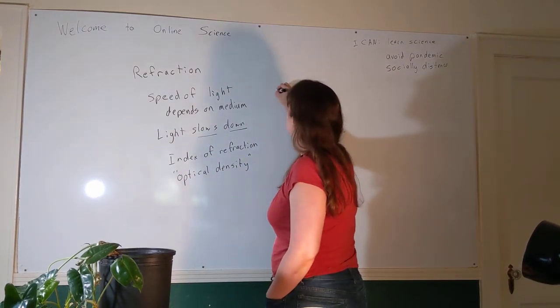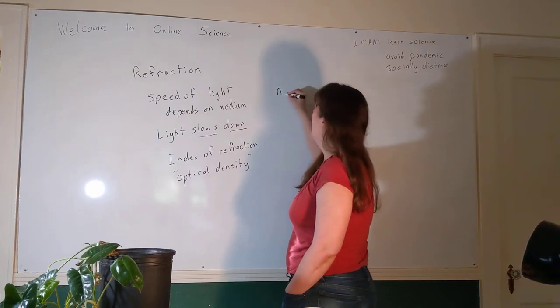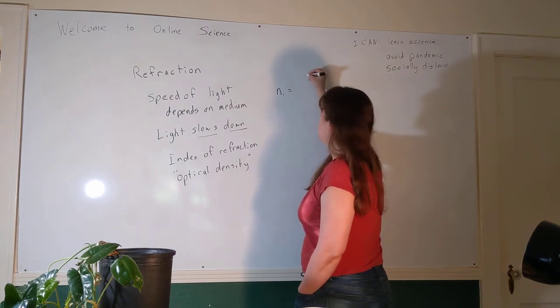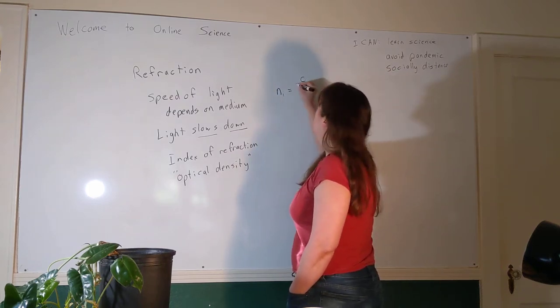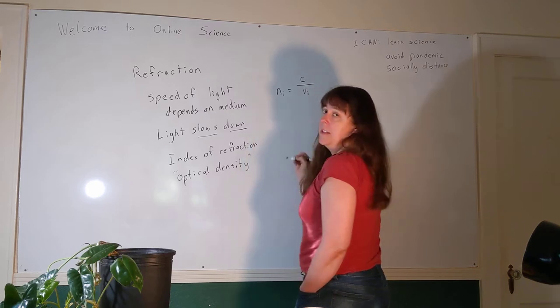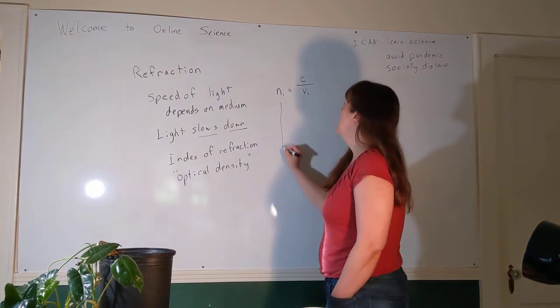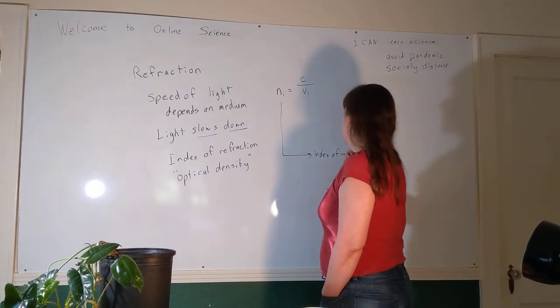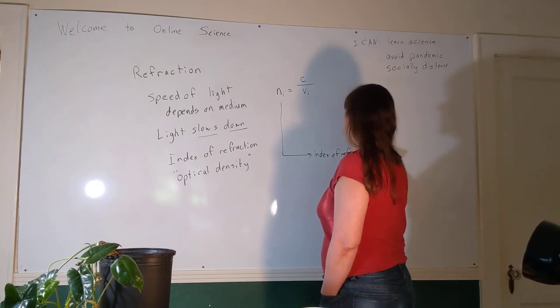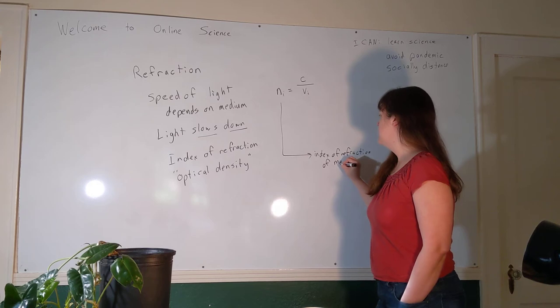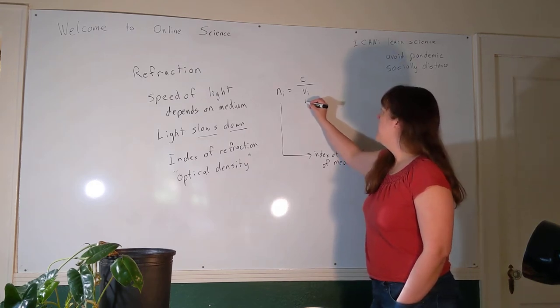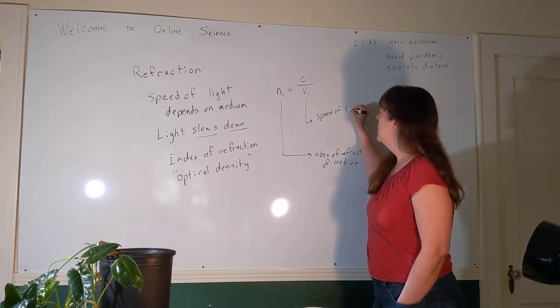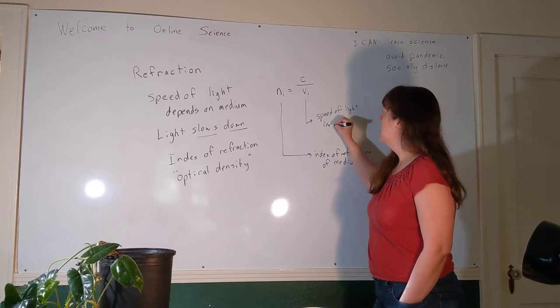The bigger the index of refraction is, the more light slows down in this medium. So here's our equation: the symbol for index of refraction is a lowercase n, usually given a subscript for the substance we're talking about. It's a pretty simple equation: it's c, which is the speed of light in a vacuum, divided by v sub i, where v sub i is the speed of light in this medium. So n sub i is the index of refraction of the medium, and v sub i is the speed of light in that medium.